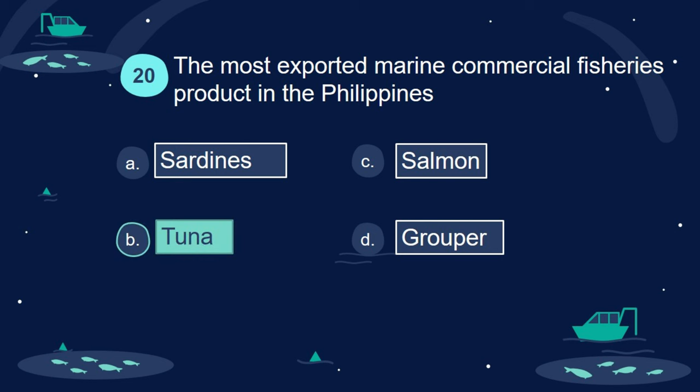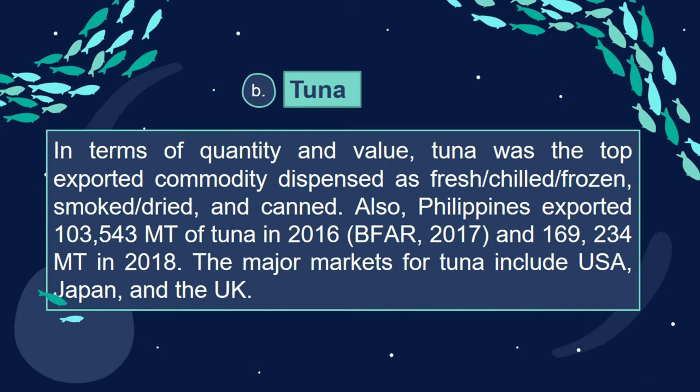Answer: B. Tuna. In terms of quantity and value, tuna was the top exported commodity dispensed as fresh/chilled/frozen, smoked/dried, and canned. The Philippines exported 103,543 metric tonnes of tuna in 2016 (BFAR, 2017) and 169,234 mt in 2018. The major markets for tuna include the USA, Japan, and the UK.